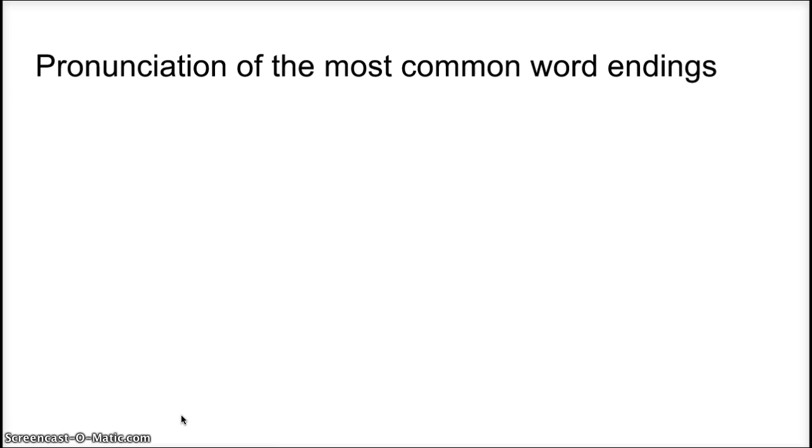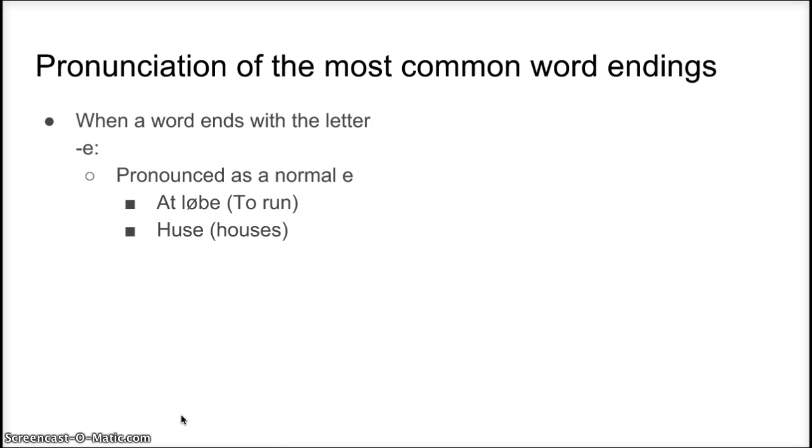The first common word ending is when a word ends with the letter E. This is pronounced as a normal Danish E. To run, for example, is called at løbe. Houses, for example, is called huse. Again, a normal E sound. And remember, E in Danish is pronounced E.